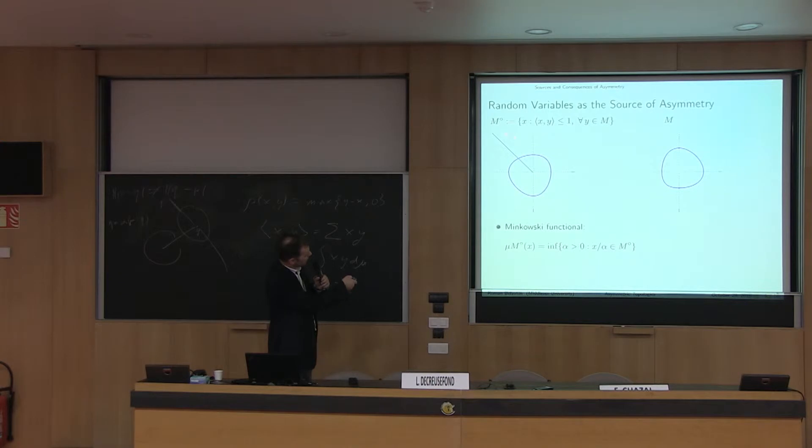We consider Minkowski functional, which is basically considered as a ray defined by some point x. This is infimum of alpha, and you want to absorb this x divided by lambda into the set. This in fact corresponds to support function of the original set. Every ray in this space corresponds to a hyperplane and half space in the dual space.